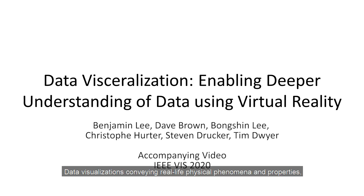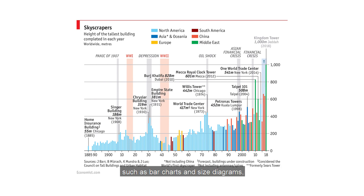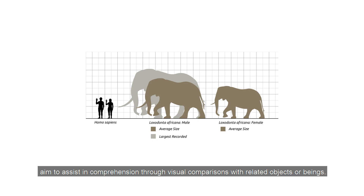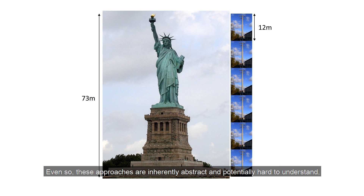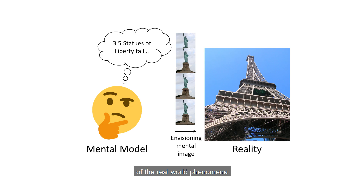Data visualizations conveying real-life physical phenomena and properties, such as bar charts and size diagrams, aim to assist in comprehension through visual comparisons with related objects or beings. Similarly, concrete scales associate physical measurements and quantities with more familiar units to help build mental models of scale. Even so, these approaches are inherently abstract and potentially hard to understand, requiring cognitive effort to accurately envision the intended mental imagery of the real-world phenomena.